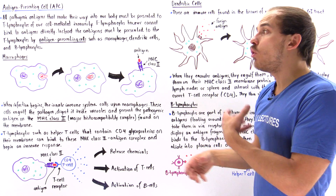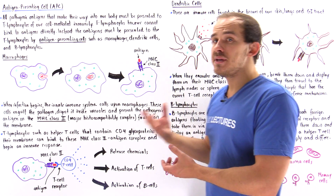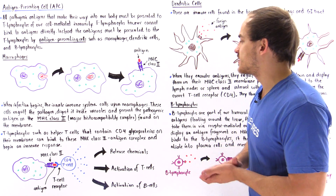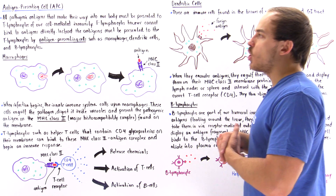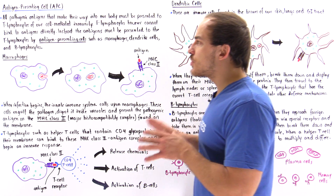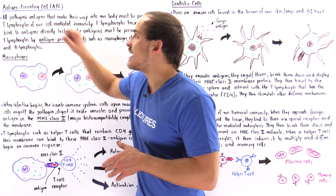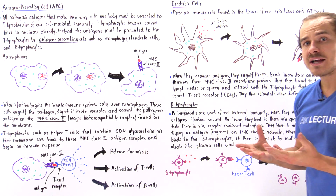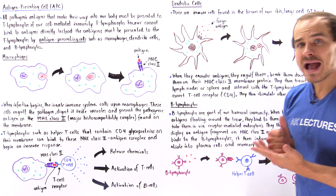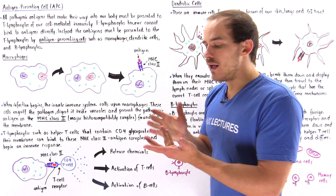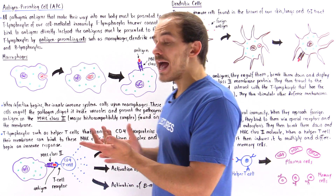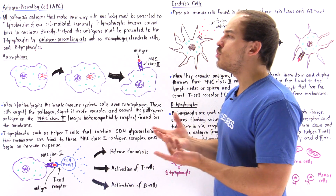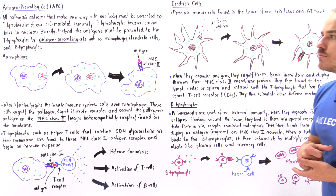Once the lymphocyte binds, only then can it begin some type of defensive mechanism. The three types of antigen-presenting cells we're going to focus on in this lecture are macrophages, dendritic cells, as well as B lymphocytes, the cells of our humoral immunity system.